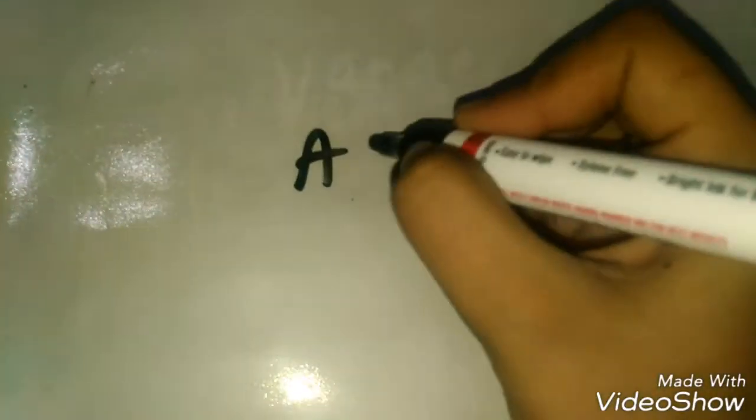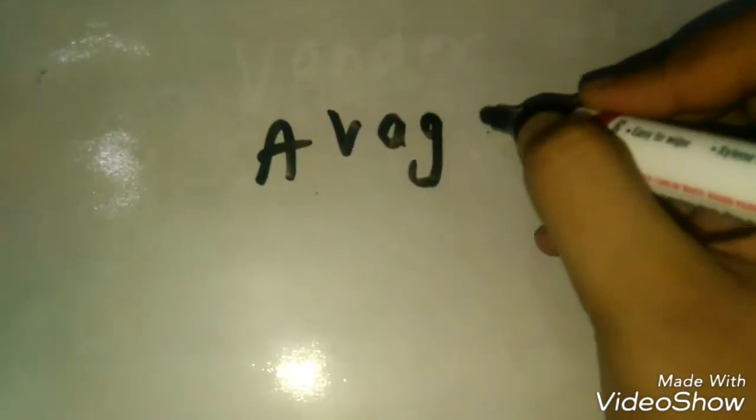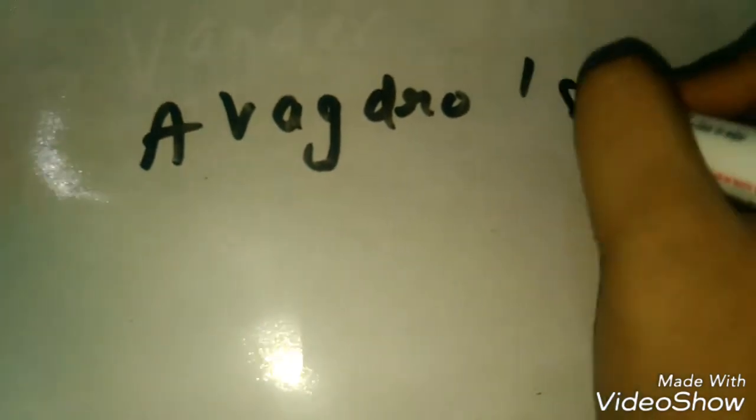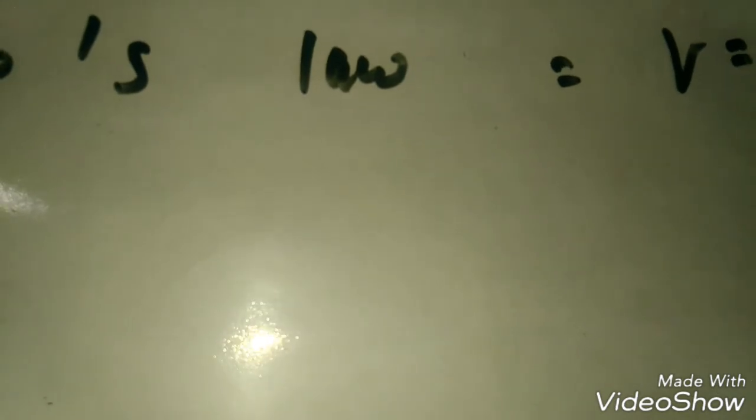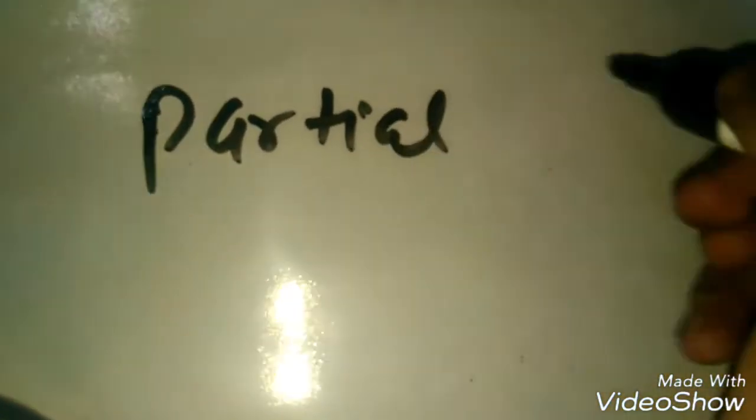I have just shown the formulas. We have a lot in the description. We will also upload a lot of videos. So we will focus on formulas. The next one is Avogadro's law. What is Avogadro's law? V is equals to Kn.